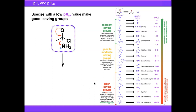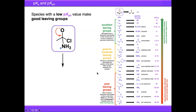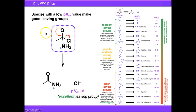If the lone pair instead kicks out NH₃⁺, we end up with neutral ammonia as our leaving group. The pKaH of ammonia is 10.5 — that's a reasonably good leaving group, so this process is actually viable. It's worth noting that X⁻ doesn't always have to be anionic; it can be a neutral molecule. Finally, if we kick out the group on the right, we end up with chloride, which is an incredibly good leaving group reflected by its very low pKaH. The lower the number, the better the leaving group — so we would predict chloride departure as the preferred pathway.